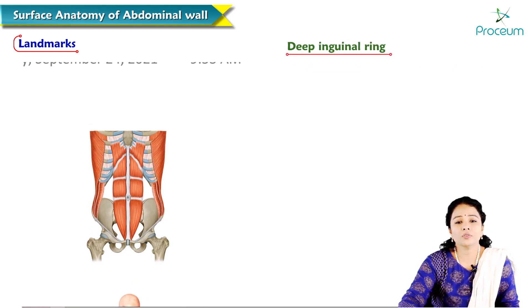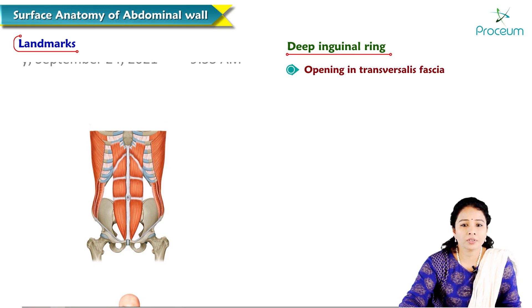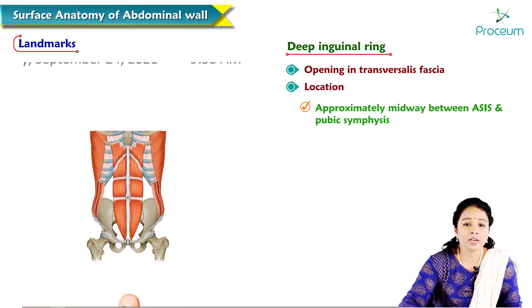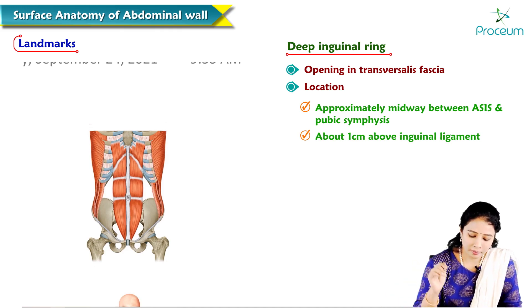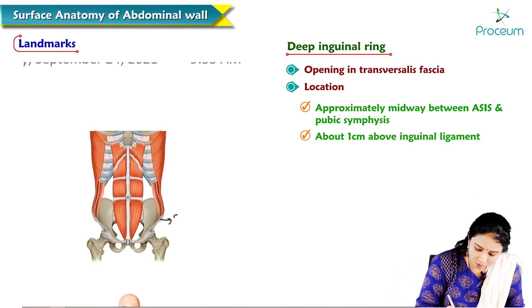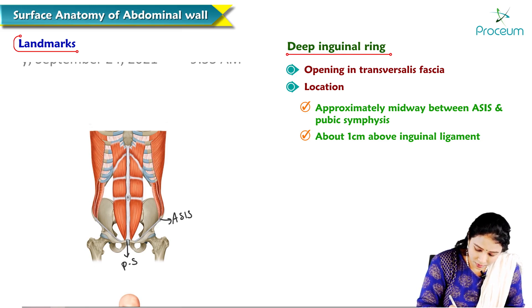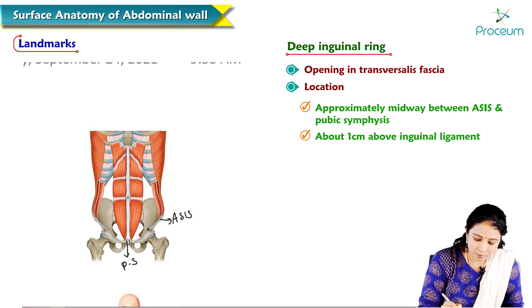The deep inguinal ring is an opening in the fascia transversalis, located approximately midway between the anterior superior iliac spine and the pubic symphysis, and 1 cm above the inguinal ligament. This corresponds to a point just above the mid-inguinal point.